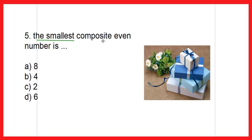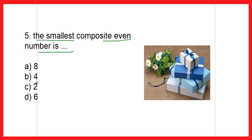The smallest composite even number is: eight, four, two, or six? This question is for you — solve it and tell me through the comment box which is the smallest composite even number out of eight, four, two, and six.